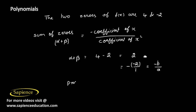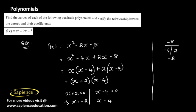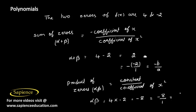Next, we verify the product of zeros. α·β should equal the constant term divided by the coefficient of x². Here, α·β = 4 × (-2) = -8, which can be written as -8/1. Based on our polynomial, the constant term is -8 and the coefficient of x² is 1, so this equals c/a. Thus the relationship is verified.